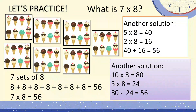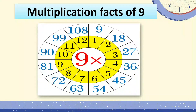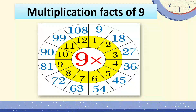Now let's move on to the multiplication facts of 9. The 9 is in the middle of the wheel, multiplied by the number in yellow, and the product is the number in blue. For example, 9 times 1 is 9, 9 times 2 is 18, 9 times 3 is 27, 9 times 4 is 36, and so on.